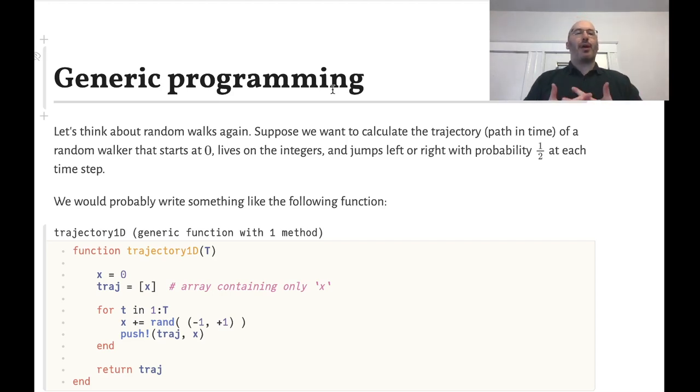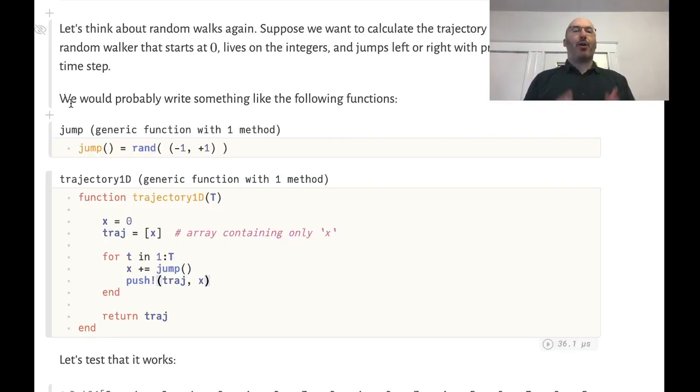To understand the idea, let's go back to thinking about a random walk again. We want to simulate the trajectory of a random walk, that is its motion in time. Suppose we have a walker which starts at position 0 and lives on the integers and jumps left or right with probability one-half at each time step.